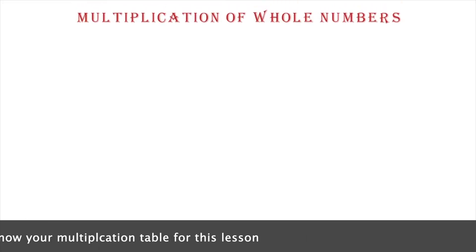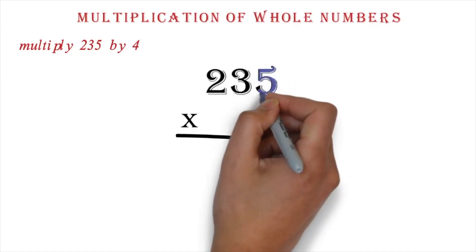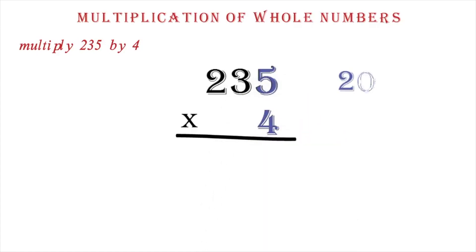Multiplication of whole numbers. Let's go straight ahead and use an example to explain this. We want to multiply 235 by 4. We want to line them up from the units column as usual. Then we multiply each digit in the 235 by the 4, starting from the units column. So we multiply 5 by 4 to get 20. This is a two-digit number, so we write the 0 and carry the 2, as we learned when we were adding.